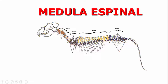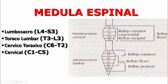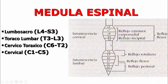Las secciones son: cervical, cérvico-torácica, toracolumbar y lumbosacra. Todos los reflejos miotácticos del miembro torácico surgirán del segmento medular cervical 6 a torácico 2. Ningún reflejo miotáctico saldrá hacia adelante ni hacia atrás de esas intumescencias. Con esto podemos evaluar el miembro torácico.